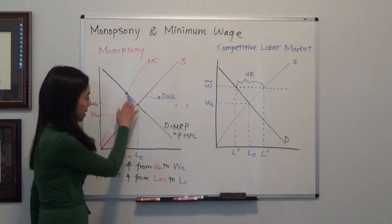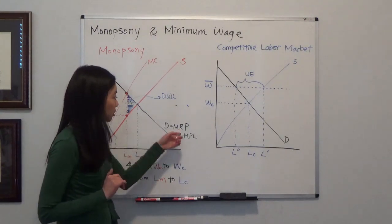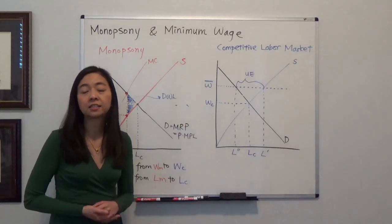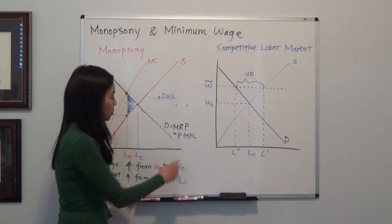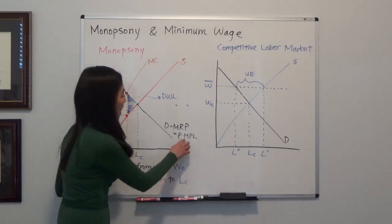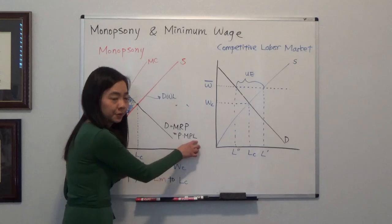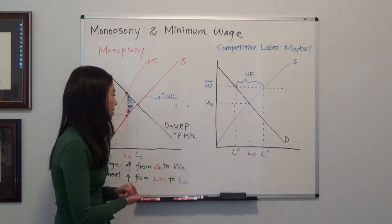Now, the demand of this monopsony will be equal to the marginal revenue product, meaning that's the value that the worker provides to the company. So that's also equal to the price of the product that the company sells times the productivity of the labor. So we're assuming that we only hire labor so there's no other capital or other things.